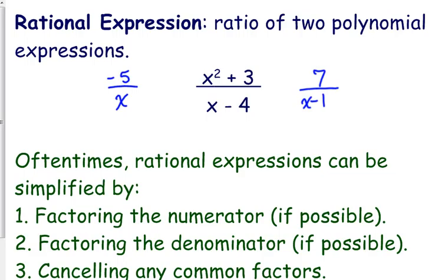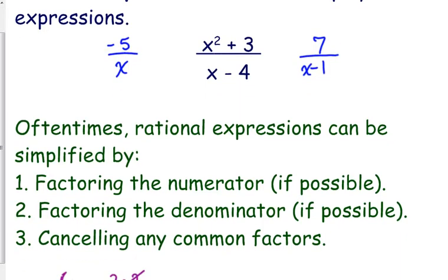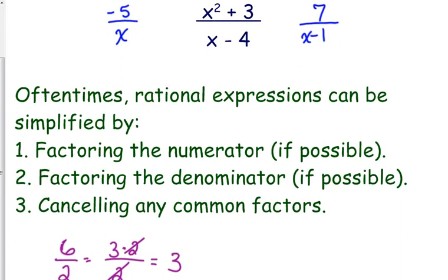We're going to start with simplifying these rational expressions. A lot of times they can be simplified by factoring, if possible, top and bottom. And then you can cancel stuff that's in the top and in the bottom if it's a factor. You cannot cancel what we canceled in the beginning.